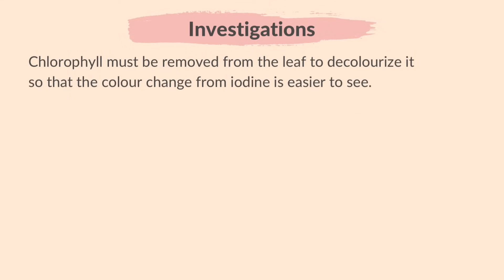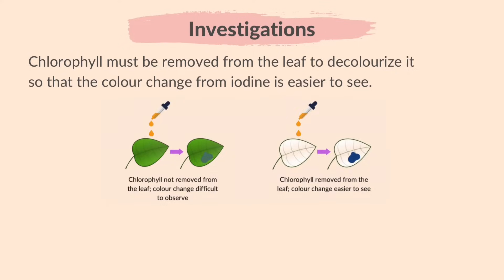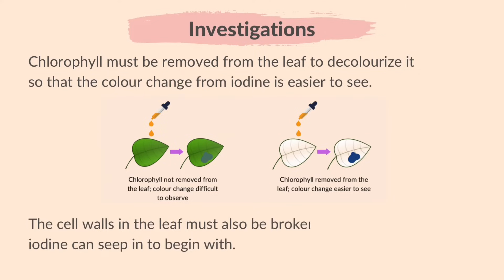Next, we need to remove the chlorophyll to decolorize the leaf so that the color change from iodine is easier to see. As shown in the illustration, the color change is easier to determine when the chlorophyll is removed from the leaf. Also, we can't just add iodine onto a fresh leaf and expect results — first of all, we need to break the leaf so that the iodine can seep in.